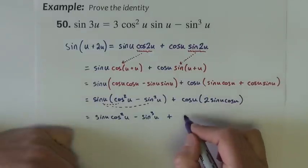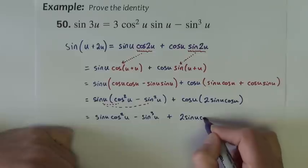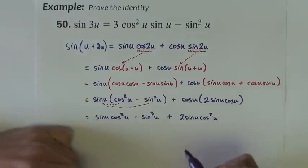and there's no distributive, because there's no plus, but we're just multiplying together, so it will be 2, sine u, cosine squared u.